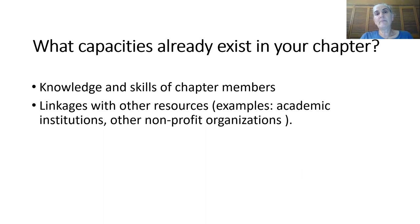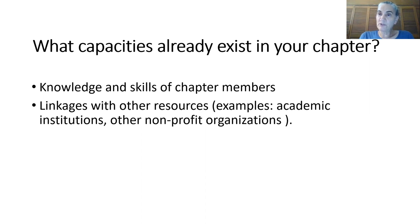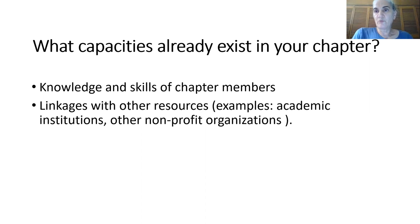First, make an assessment of the skills, knowledge, and other resources that exist among your chapter members. You all know something and you all have skills — maybe somebody has a truck that you can use for transporting seedlings for one of these activities. Compile a list of all that knowledge, skills, and other resources your chapter has that might be useful for the activities in your strategic plan.